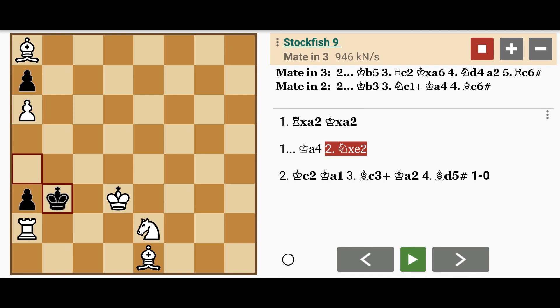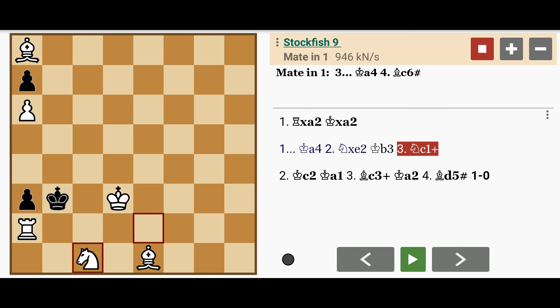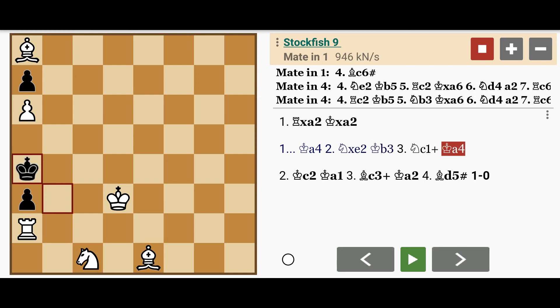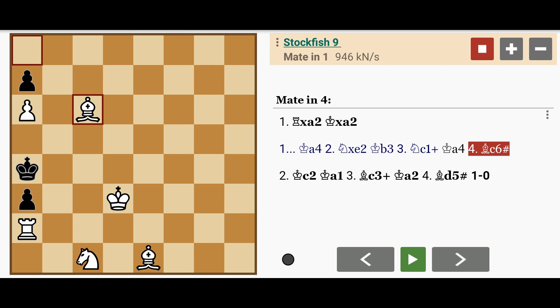If black moves to b3, white wins a little more quickly with Nc1, the king has to move to a4, and Bc6 checkmate. Notice how all of white's pieces seem to be working together.